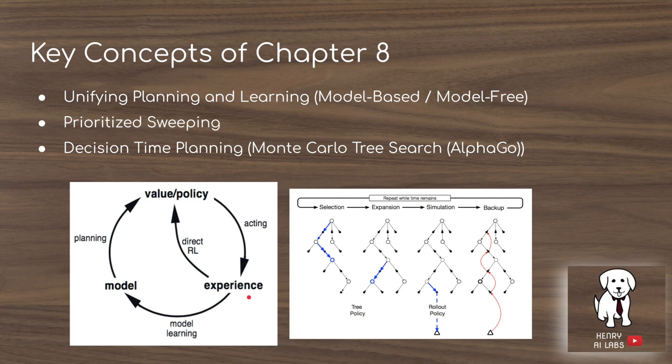We'll look at things like prioritized sweeping, trajectory sampling, and decision-time planning. We'll also cover the Monte Carlo tree search algorithm, which is a key idea behind AlphaGo — although we won't fully get into the AlphaGo algorithm until chapter 16.